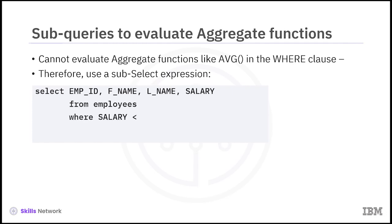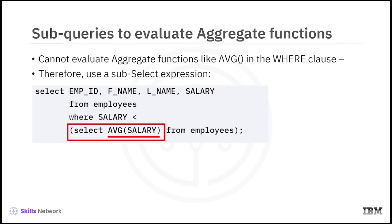SELECT employee_ID, first_name, last_name, salary FROM employees WHERE salary is less than (SELECT AVG(salary) FROM employees). Notice that the average function is evaluated in the first part of the subquery, allowing us to circumvent the limitation of evaluating it directly in the WHERE clause.